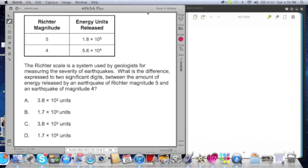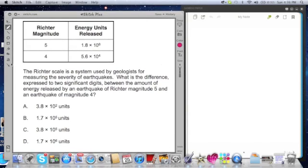Whenever you're given a question, you want to look at it and catch all the details. The first thing you always look at is, if they give you a diagram, make sure you look over the diagram. It has a Richter magnitude on the left and energy units released on the right. 5 appears to be equal to 1.8 times 10 to the sixth. Right away I can see that this problem involves numbers written in scientific notation.